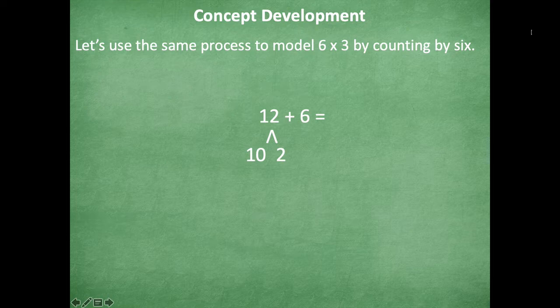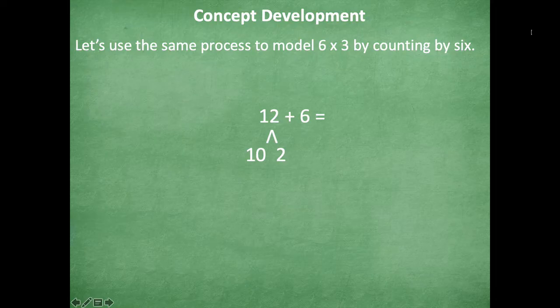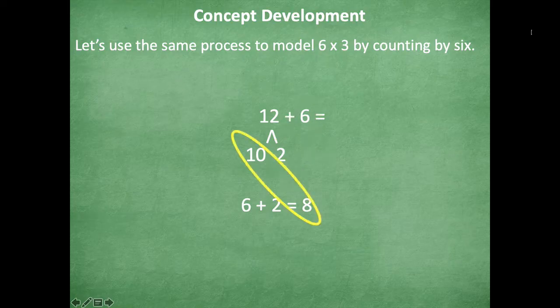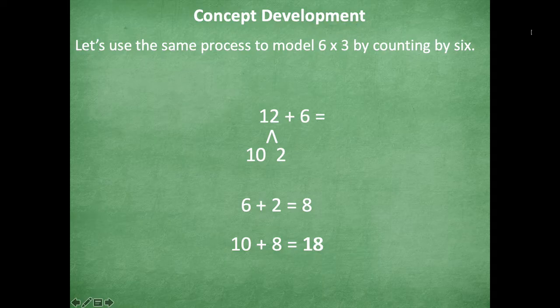So now I'm just going to add the ones. But if I pull out that ten, it keeps it as a nice friendly number for us to be able to add. So now I'm going to start with this where I'm going to add my ones. So 6 + 2 = 8 and then add what's left, which is ten and eight. So 10 + 8 = 18. So 12 + 6 = 18, which is also the same as six times three.